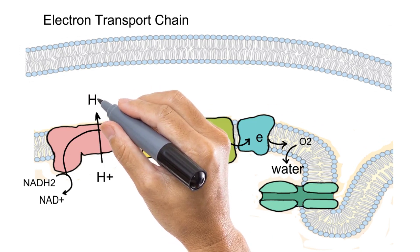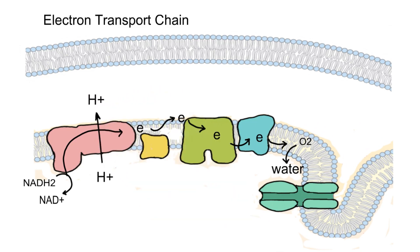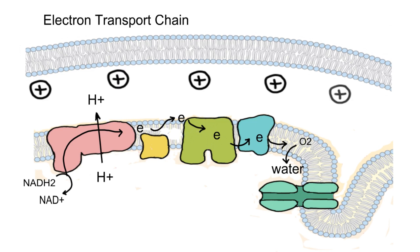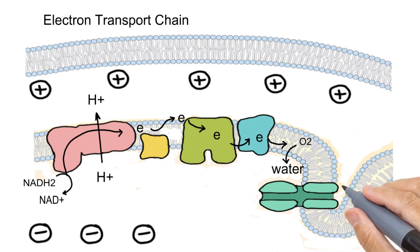While electrons are transferred to oxygen, protons from the matrix are pumped to the intermembrane space. This increases the concentration of H+ ions in the intermembrane space and decreases it in the matrix, generating a positive charge in the intermembrane space and negative charge in the mitochondrial matrix. This separation of charges generates a force called the proton motive force.